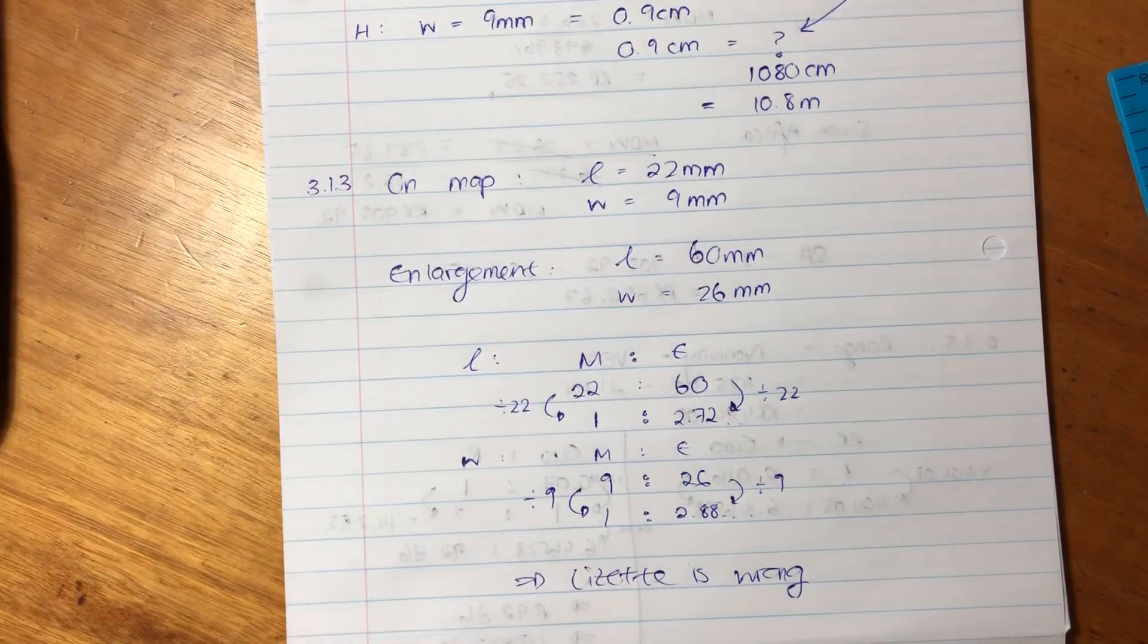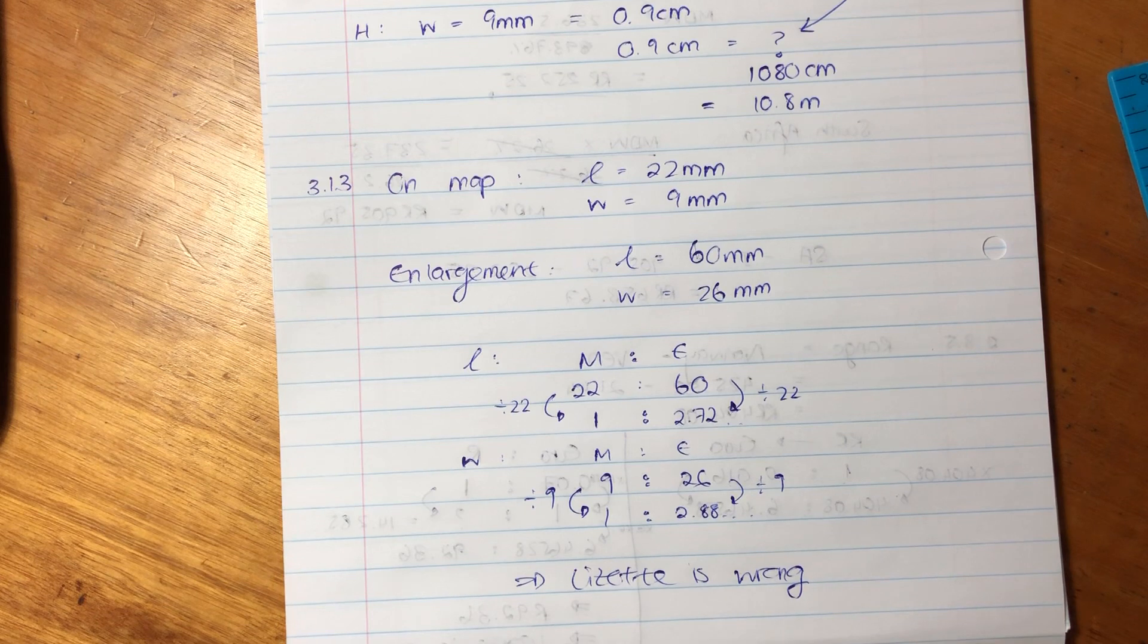It's somewhere between 2.7 and 2.8 times bigger. So Lisette is wrong. So again, we're using ratios here, but it's all with maps. So it's very important that you understand how to leverage a ratio. Cool. Let's move on to the next question.